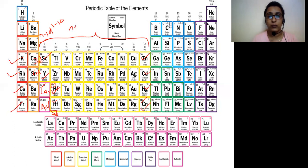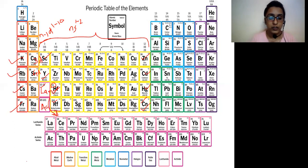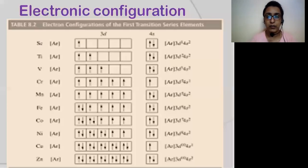Please remember all these things. Now we will move further. The electronic configuration — let's look at the first transition series, the 3D transition series.